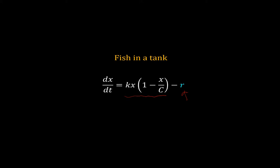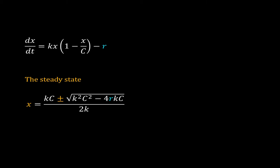Setting dx/dt equal to 0 and rearranging the terms, we get the steady state value of x: x equals k times (c plus or minus the square root of k²c² minus 4rkc), all divided by 2k. When 4rkc is greater than k²c², we have a negative number under the square root, so the steady state is a complex number, which is unrealistic.